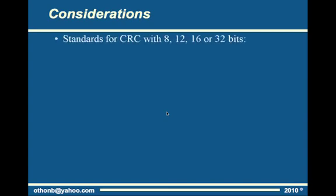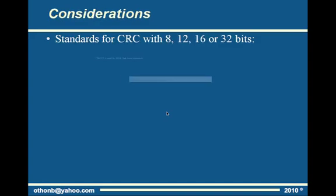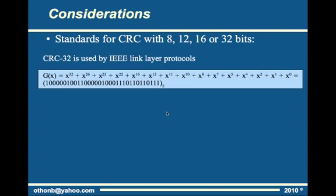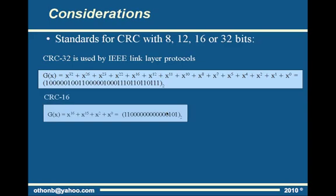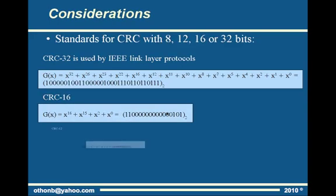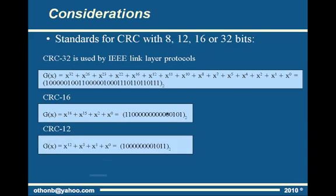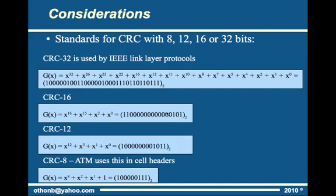Here are some CRC generators that are widely known because they are part of standards: CRC-32, used by IEEE link layer protocols such as Ethernet; CRC-16; CRC-12; and CRC-8, which is used by ATM in cell headers.